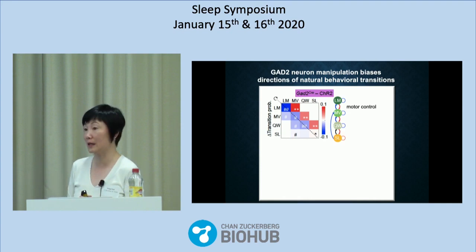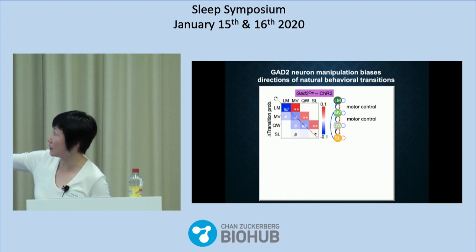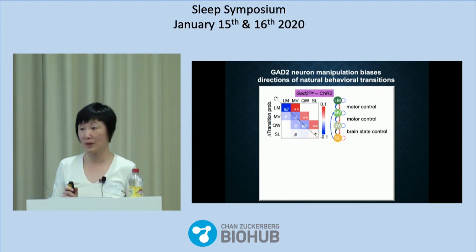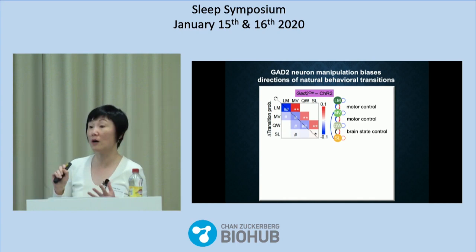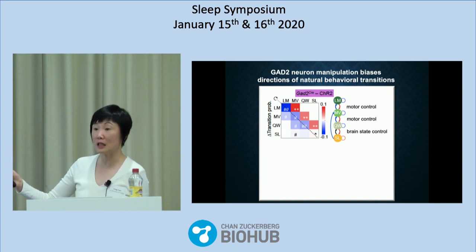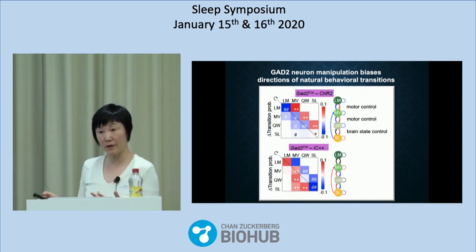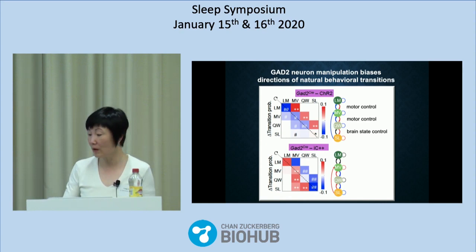We think this explains why the same neurons can control both motor activity and sleep. When we look at the transition from locomotion to immobility, we call it motor control. When we look at the transition from quiet wake to sleep, we call it brain state control. But these neurons don't care what we call these transitions — all they do is push the animal down the chain. For each transition, there are both EEG and EMG changes. When we inactivated the GAD2 neurons, there are also no artificial transitions, but the transitions are biased in the opposite direction.